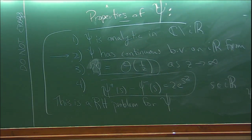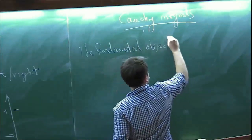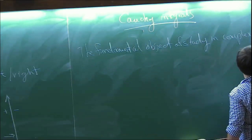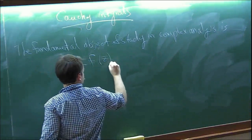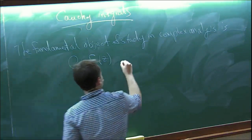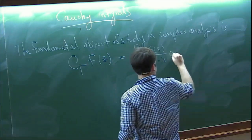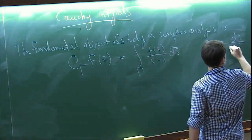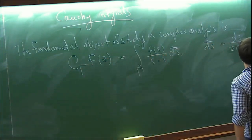Arguably the fundamental object of study in complex analysis is the Cauchy integral, which I'll denote C_γ[f](z) = ∮_γ f(s)/(s−z) · ds̄, where I use the notation ds̄ = ds/(2πi). This is defined for z in ℂ minus γ.